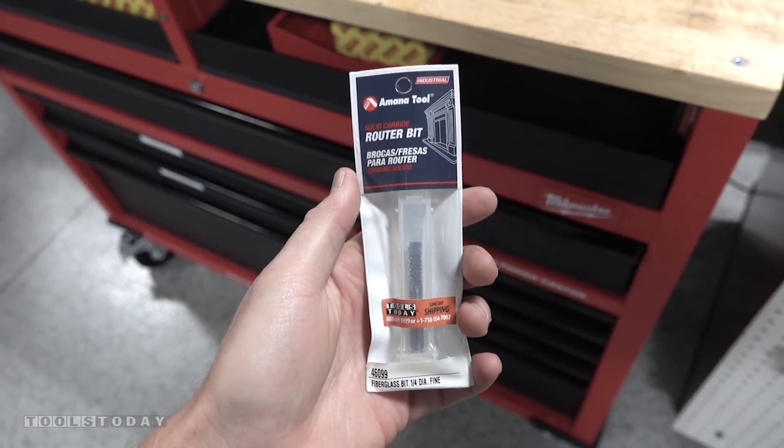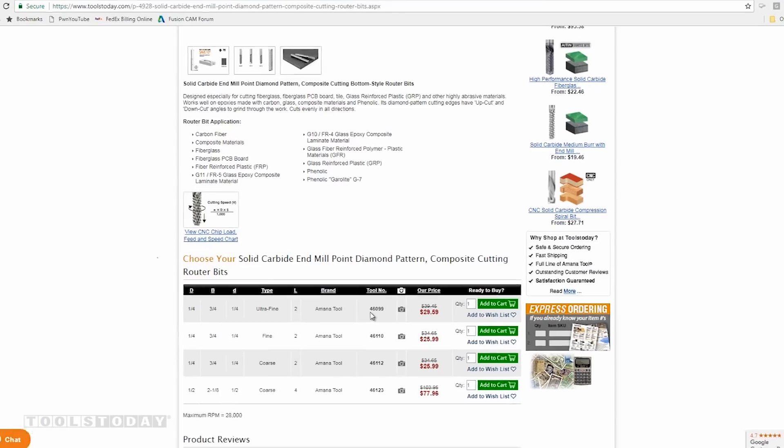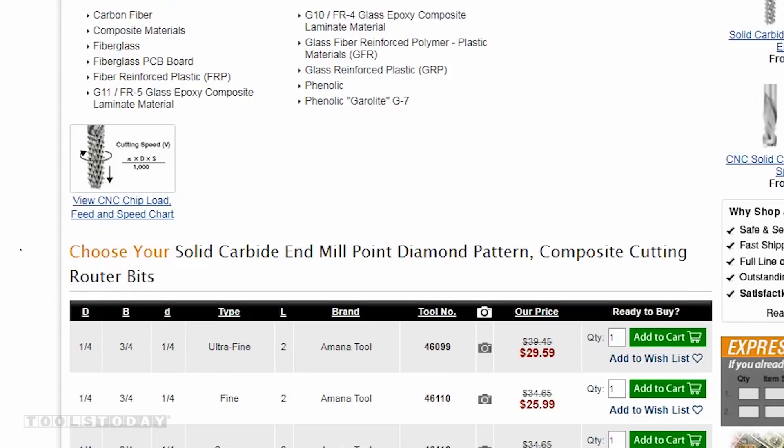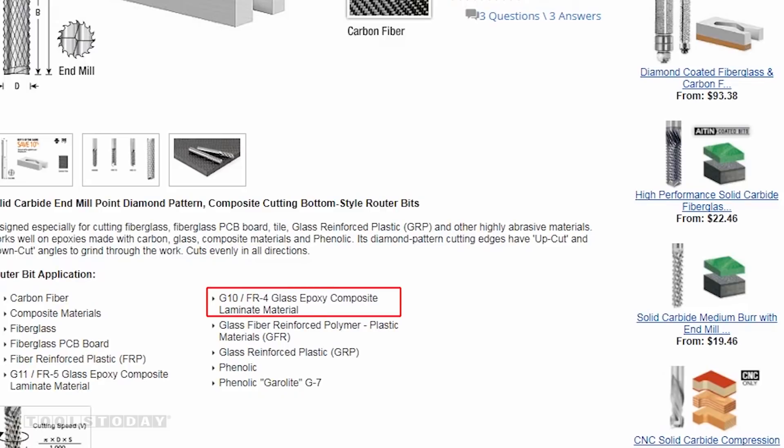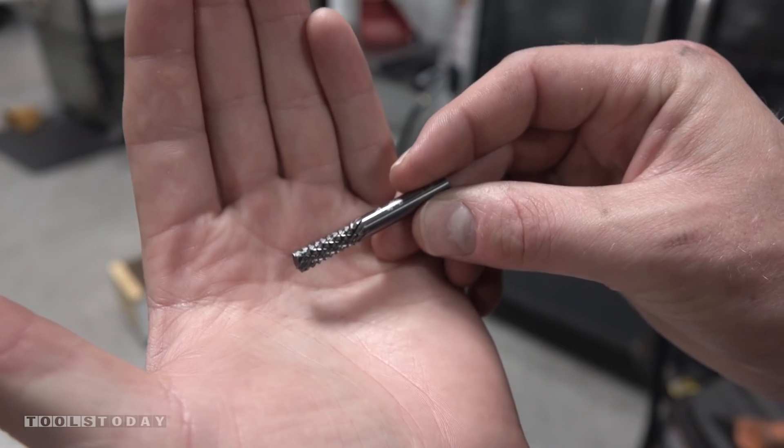The tool to do this is pretty cool. It is tool number 46099 and it is a carbide tool specifically meant to cut G10 and fiberglass and other composites. Gnarly looking tool, right?